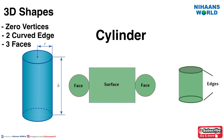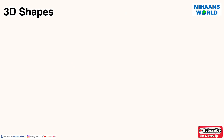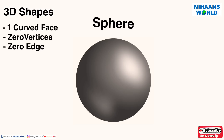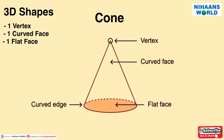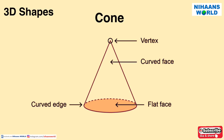A cylinder has no vertices; it has 2 curved edges and 3 faces. A cone has 1 vertex, 1 flat face, 1 curved face, and 1 curved edge.